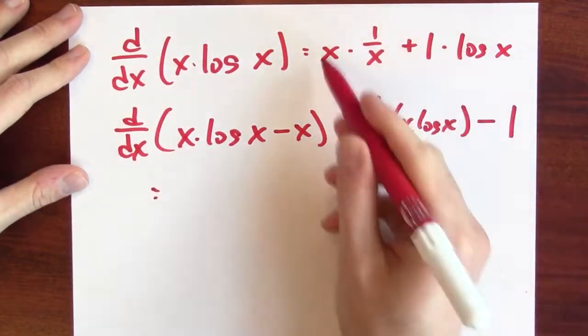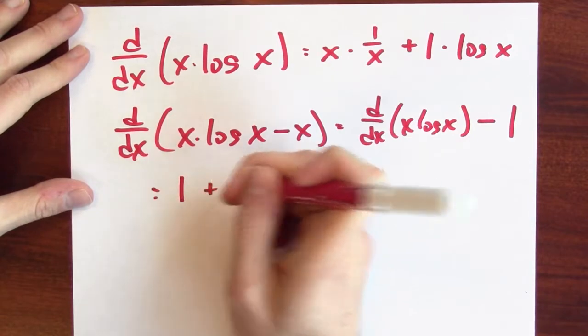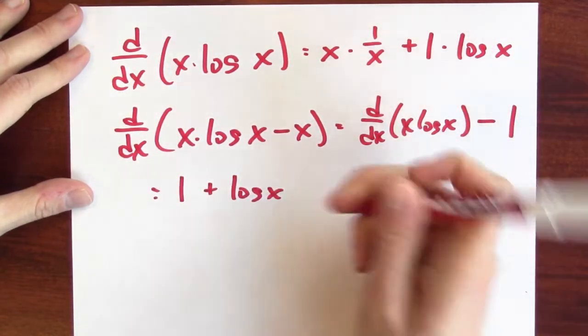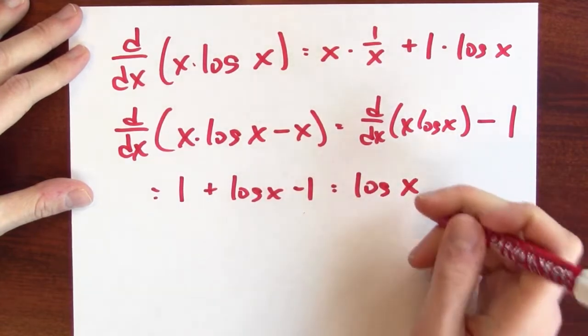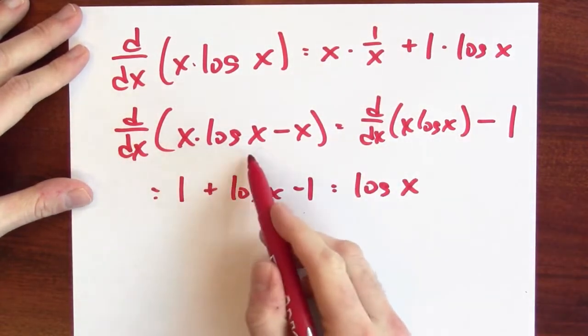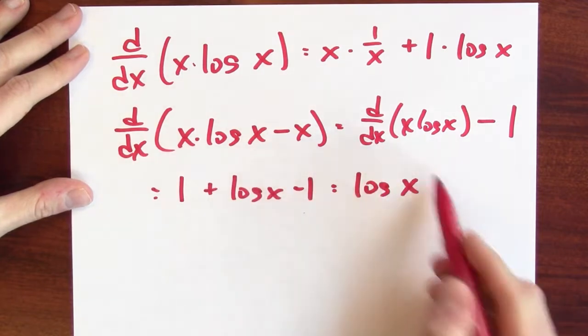But I just calculated the derivative of x log x. It's 1 plus log x and then minus 1. Well, what I'm left with then is just log x. So the derivative of x log x minus x is just log x.